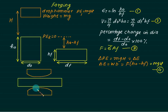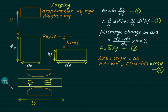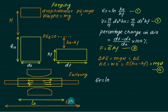In a die arrangement for fullering, if a bar of initial length L0 is forged, the material flows outward and the bar's length increases. The final length becomes LF. This operation is called fullering. The true strain in this case is defined as ln(LF / L0), since LF is larger.